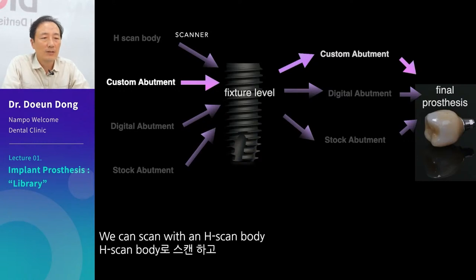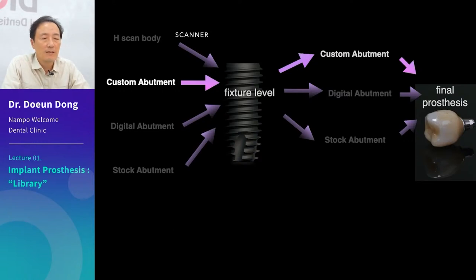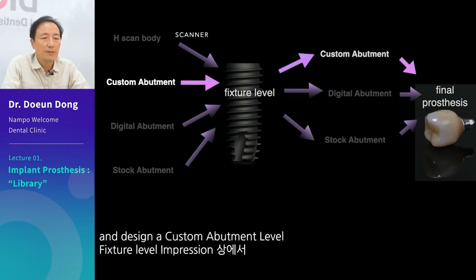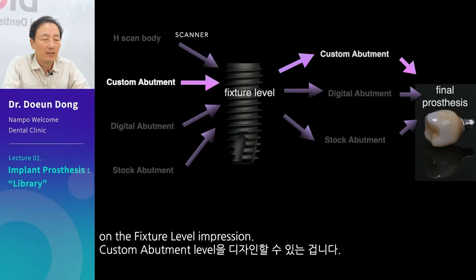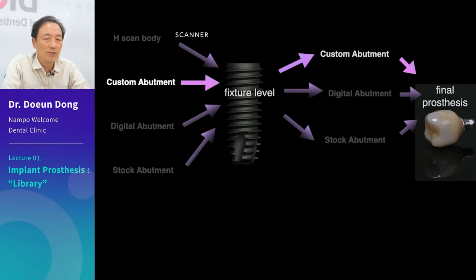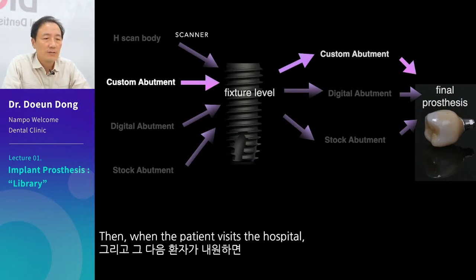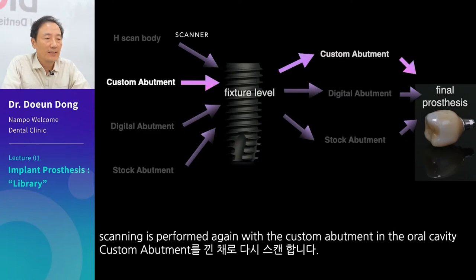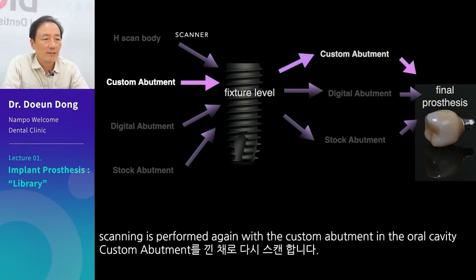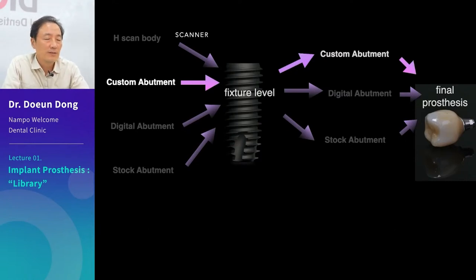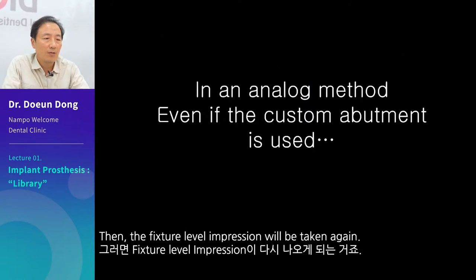We can scan with an H-scan body and design a custom abutment level on the fixture level impression. Then, when the patient visits the hospital, scanning is performed again with the custom abutment in the oral cavity, and the fixture level impression will be taken again.